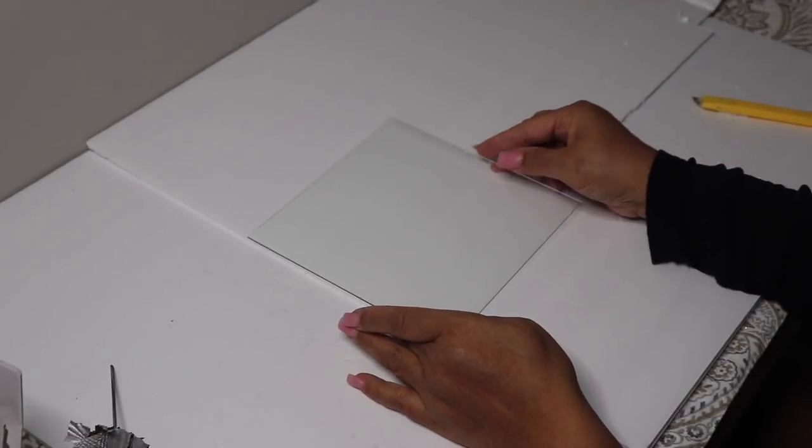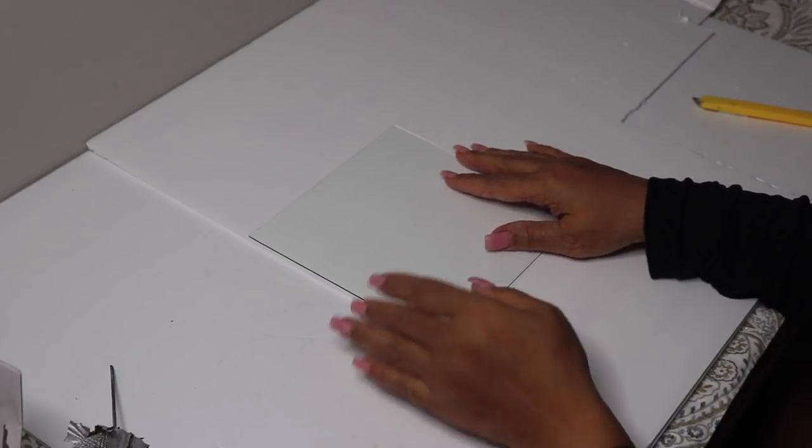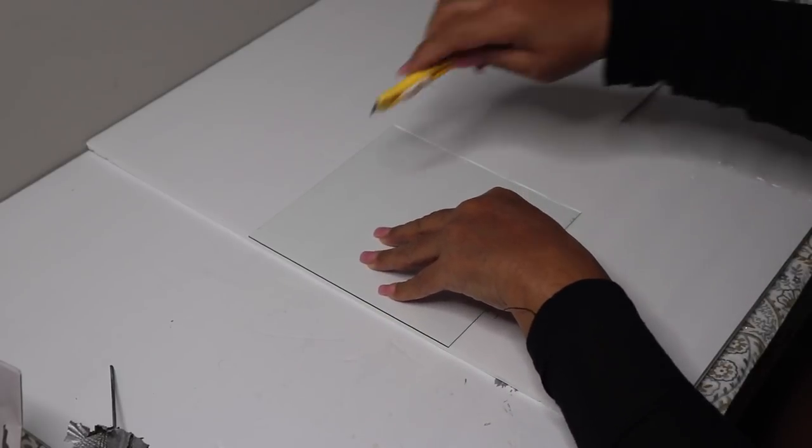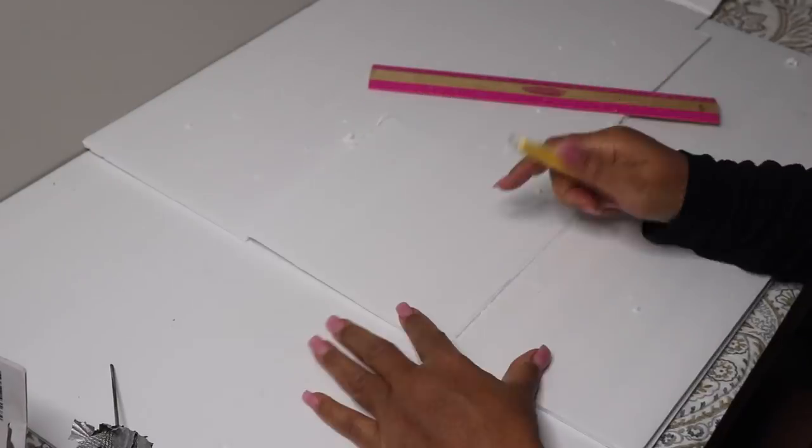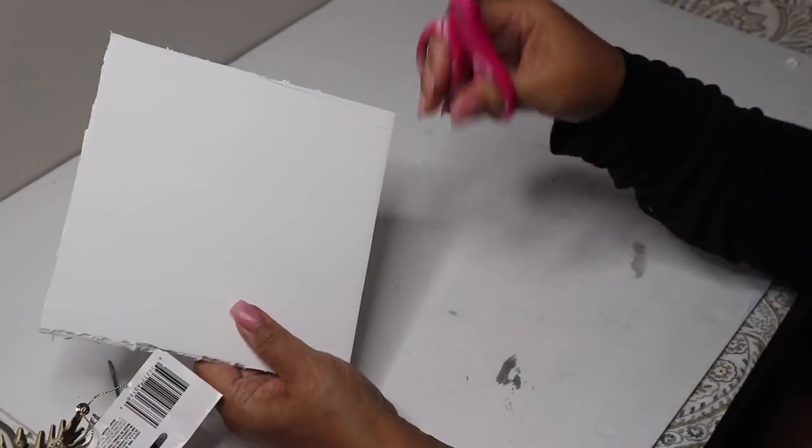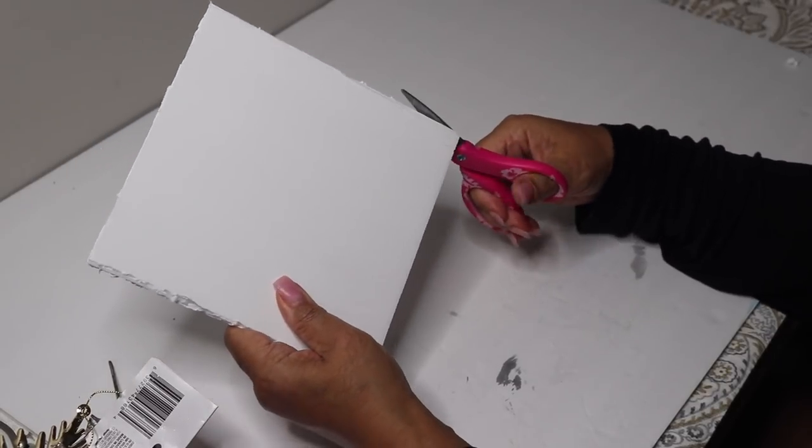Next, I traced the glass onto the foam board and cut out three pieces the same size. I trimmed the excess paper off of the foam board.